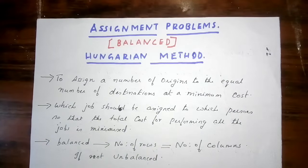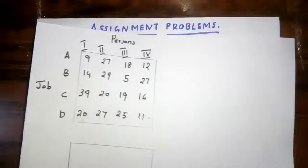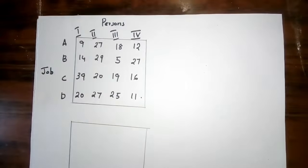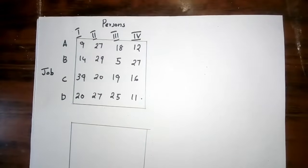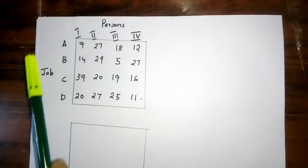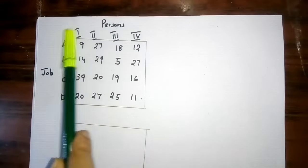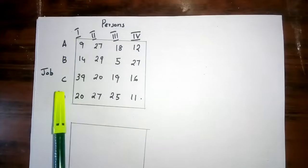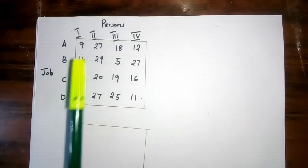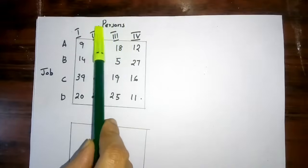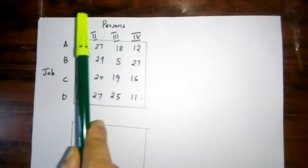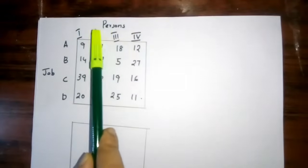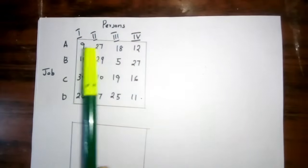I will explain the assignment table. Suppose this is an assignment table. The origin side has jobs: A, B, C, D — four jobs. The destination side has persons: 1, 2, 3, 4 — four persons.